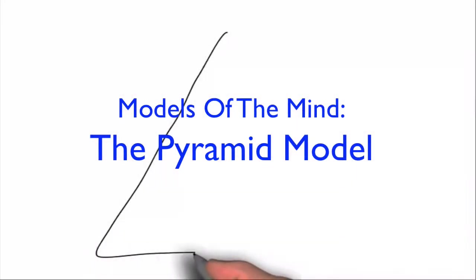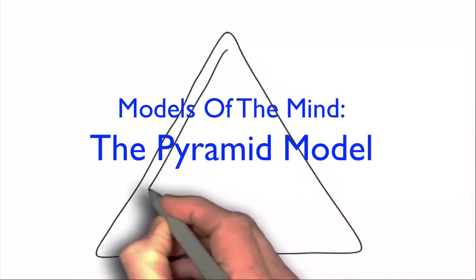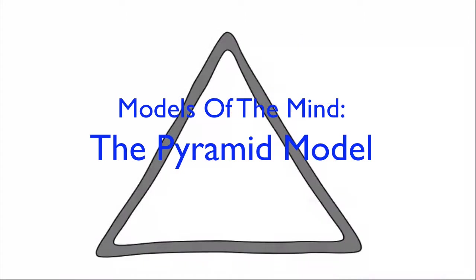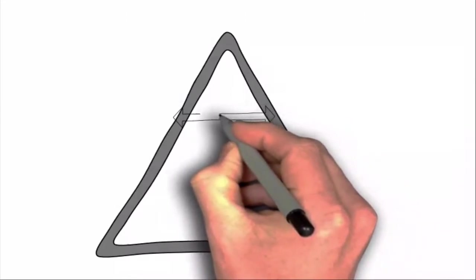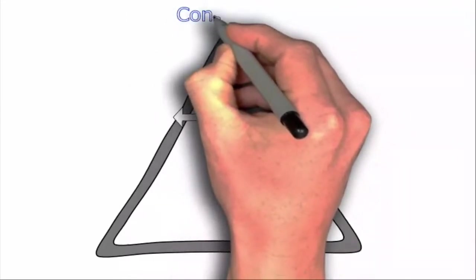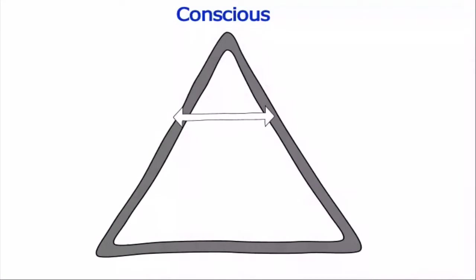So this one's called the pyramid model. There's two we're going to use. This is the pyramid model. Let's just say that this represents the mind. There's an arbitrary divide between the top part, which is the conscious mind, and the lower part, which we call the subconscious or the unconscious mind.